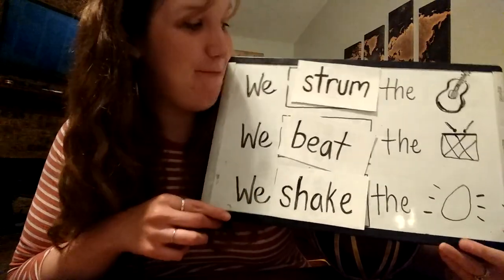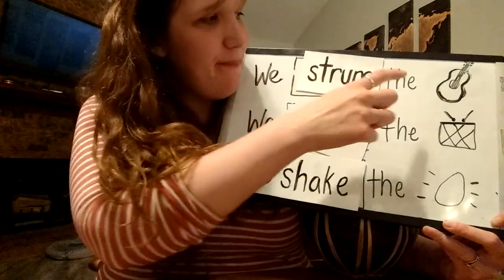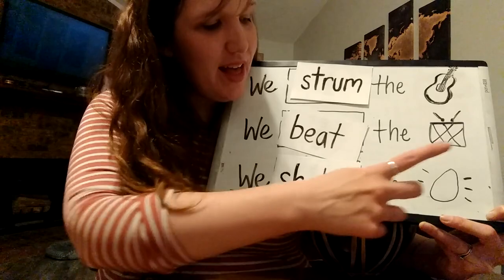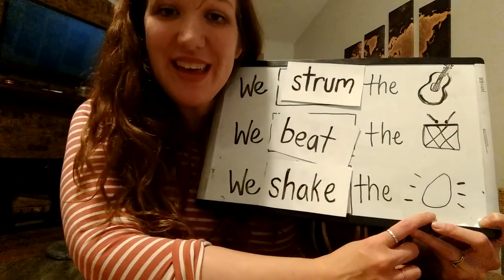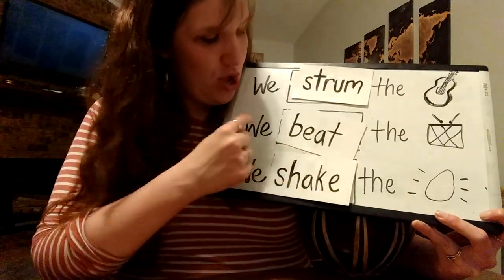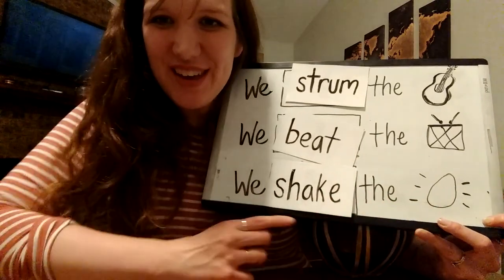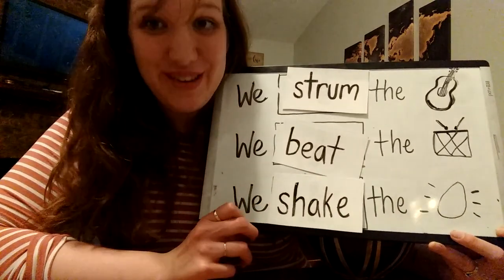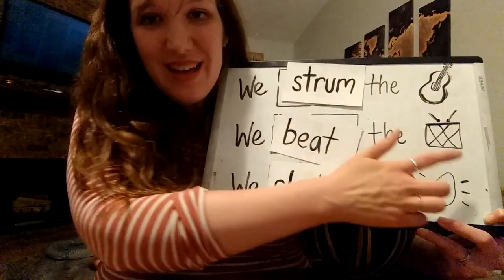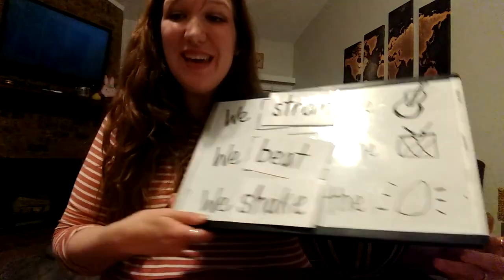Let's put it to a melody. Are you ready? We strum the ukulele, we beat the drum, we shake the egg shakers, and then we're done. Let's try it again — we strum the ukulele, we beat the drum, we shake the egg shaker, and then we're done. One more time: we strum the ukulele, we beat the drum, we shake the egg shaker, and then we're done.